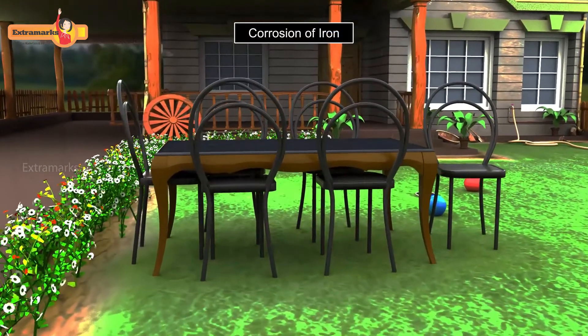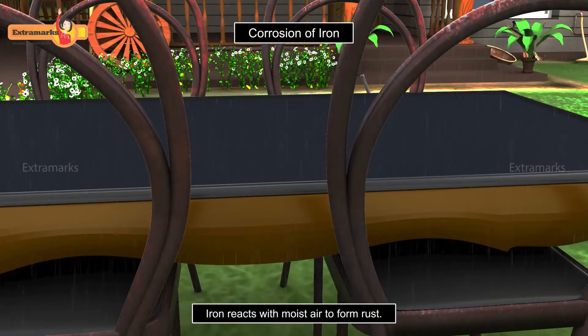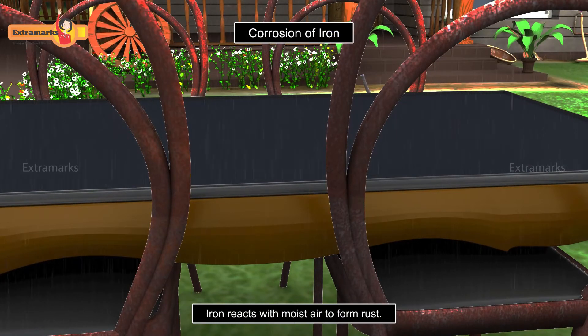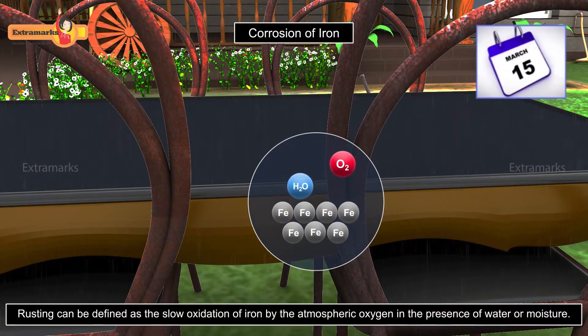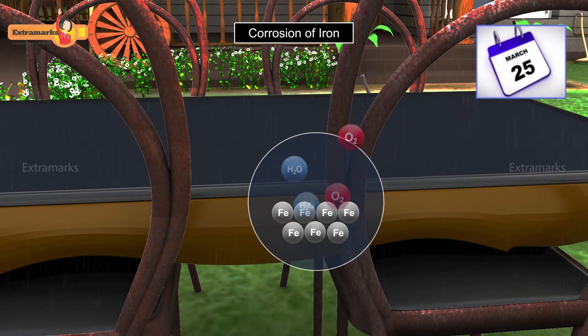Sometimes a layer of reddish-brown material is seen on the surface of iron articles. This is known as rust and the process of its formation is called rusting. Rusting can be defined as the slow oxidation of iron by the atmospheric oxygen in the presence of water or moisture. It is the most common form of corrosion.